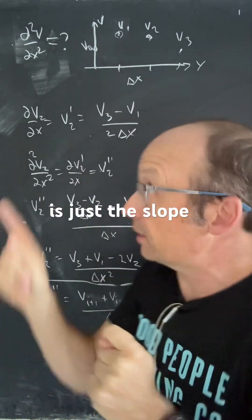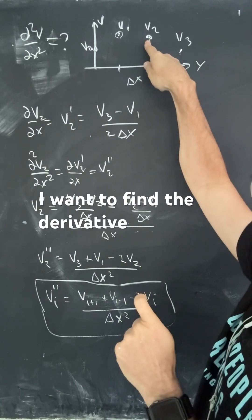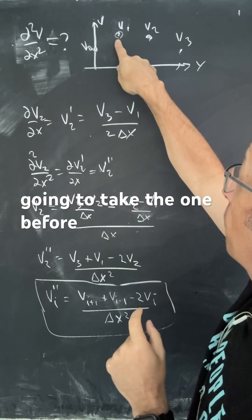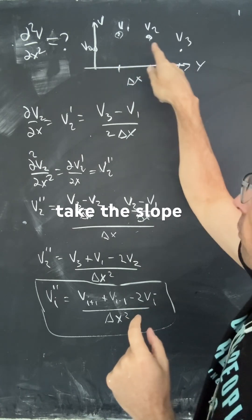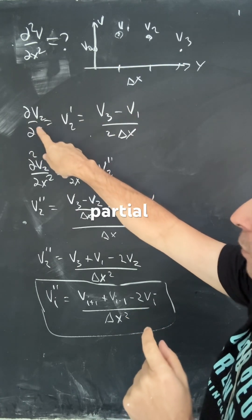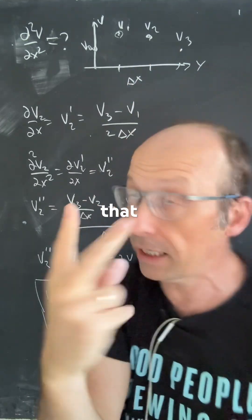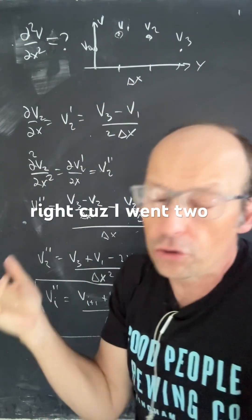Well, the first derivative is just the slope between two different points. If I want to find the derivative at point v2, at the v2 value, I'm going to take the one before it and the one after it and take the slope between those. So I can write the partial of v2 with respect to x is just going to be v3 minus v1 over twice that space interval, right, because I went two steps.